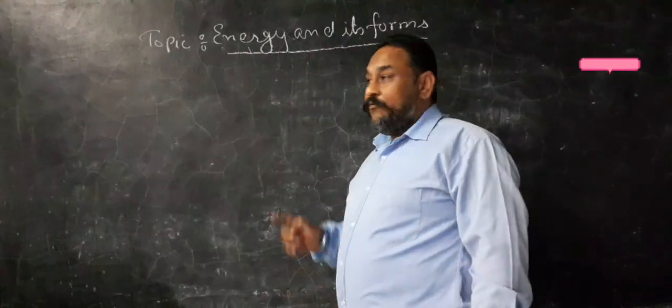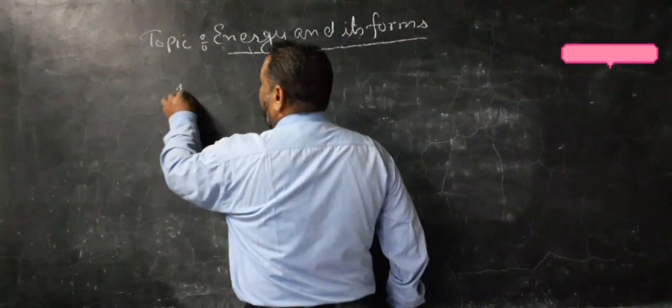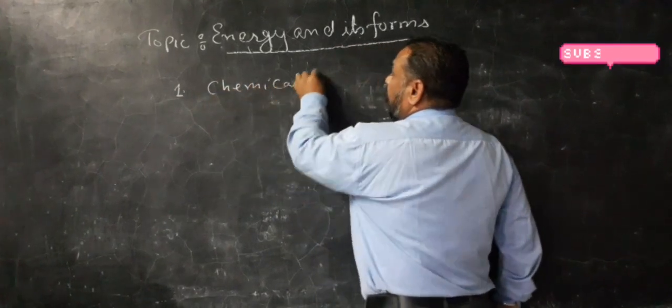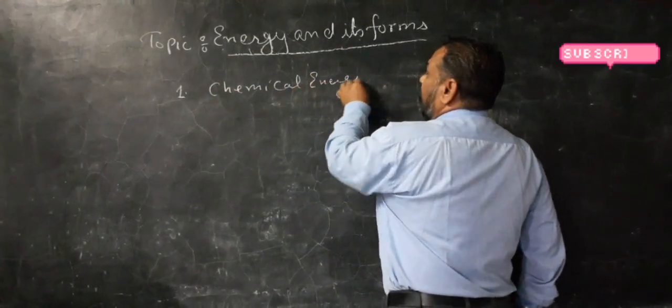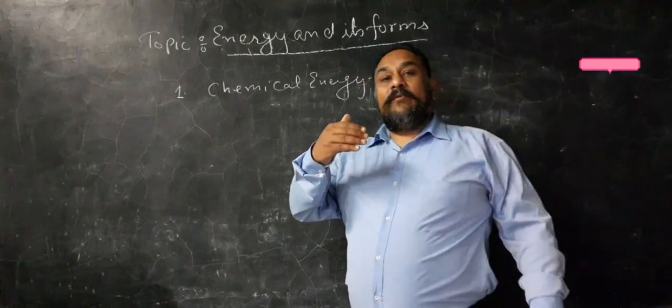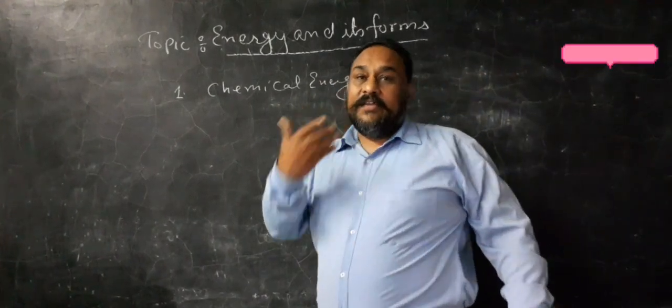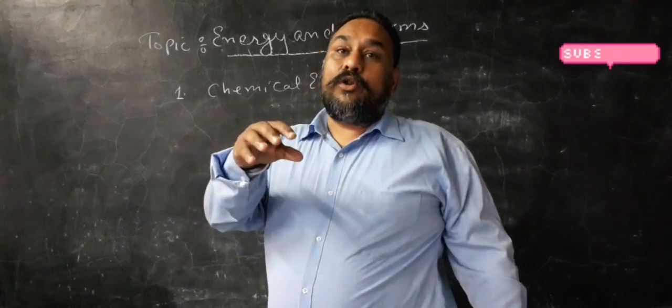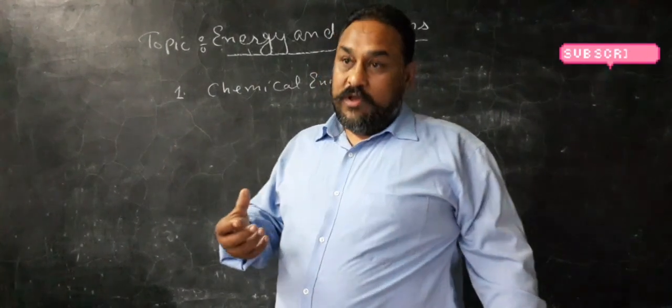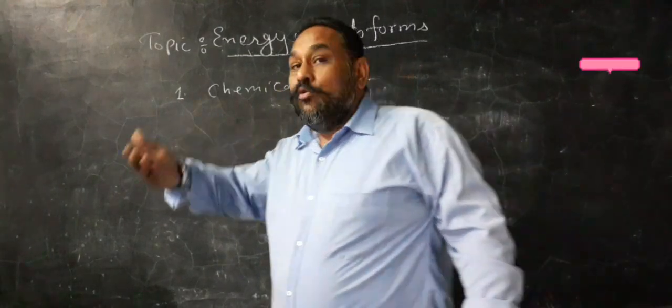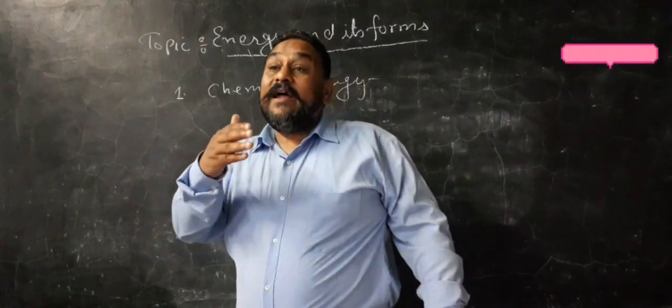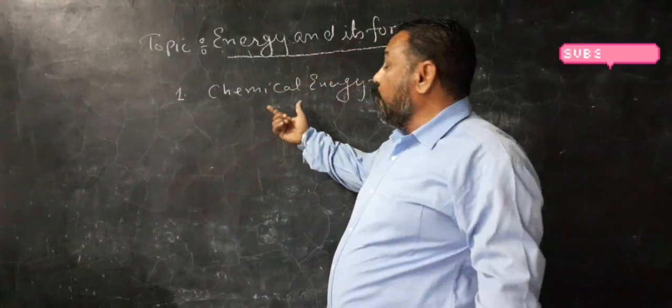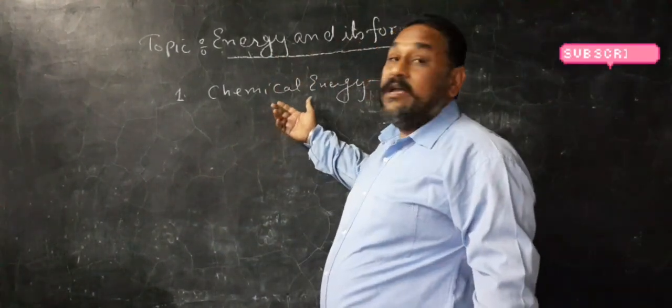First we have chemical energy. Whenever Indian railway engine is running, coal plays an important role as fuel. Coal makes the engine move. That means chemical energy - coal is a chemical and chemical plays an important role in that energy, so we can say it is chemical energy.